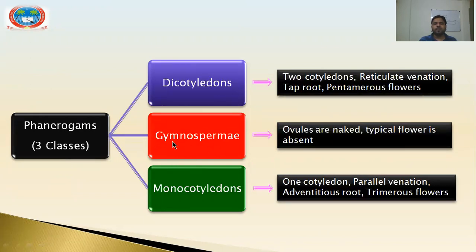The class Gymnosperms is categorized by the presence of naked ovules and the absence of a typical flower. Naked ovule means the ovule is not enclosed inside the ovary, unlike in angiosperms where ovules are covered inside the ovary. The typical flower — with calyx, corolla, androecium, and gynoecium — is absent. Those plants showing these characters are grouped under class Gymnosperms.